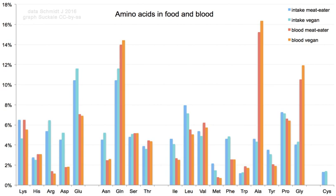Another example is the formation of hypusine in the translation initiation factor EIF5A, through modification of a lysine residue. Such modifications can also determine the localization of the protein — for example, the addition of long hydrophobic groups can cause a protein to bind to a phospholipid membrane. Some non-proteinogenic amino acids are not found in proteins. Examples include 2-aminoisobutyric acid and the neurotransmitter gamma-aminobutyric acid. Non-proteinogenic amino acids often occur as intermediates in the metabolic pathways for standard amino acids; for example, ornithine and citrulline occur in the urea cycle, part of amino acid catabolism.